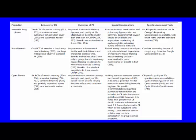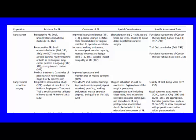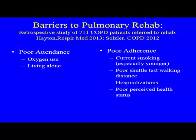The ATS consensus statement of 2013 broke down different subpopulations of lung disease including ILD, bronchiectasis, cystic fibrosis, asthma, pulmonary hypertension, lung cancer, lung volume reduction surgery, and lung transplant — covering evidence, outcomes, special considerations, and specific assessment tools for each.